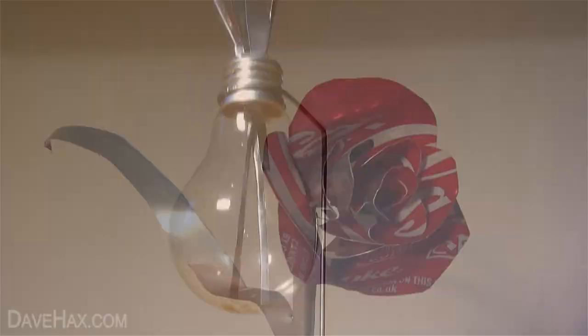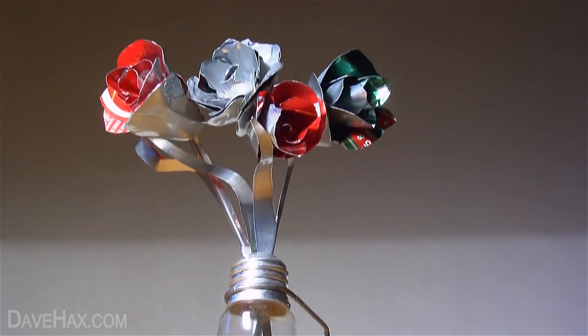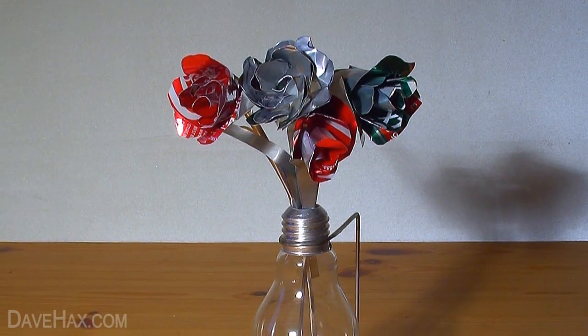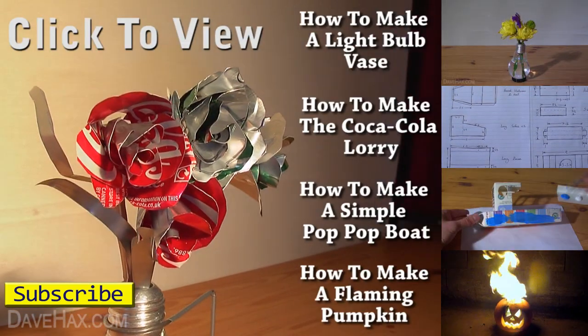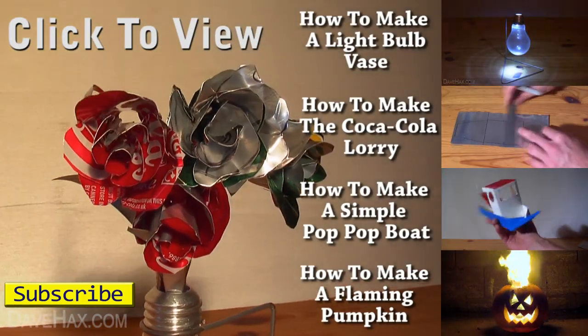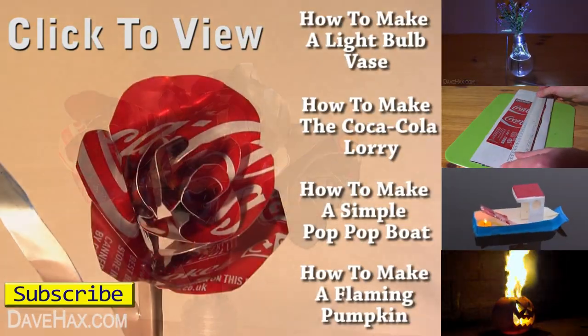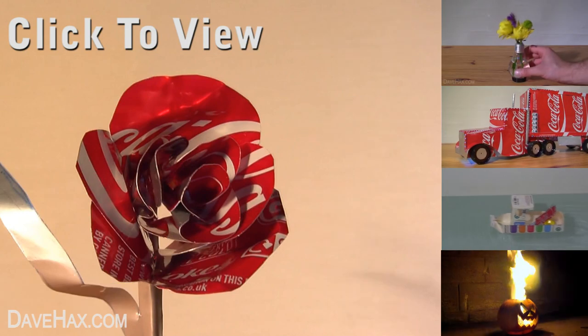Try experimenting with different drinks cans for different coloured roses. To watch the video showing you how to make the lightbulb vase, also featured in this video, click on the link at the top on the right-hand side. Or you might like to take a look at some of my other videos. Have fun, and as always, thanks for watching!